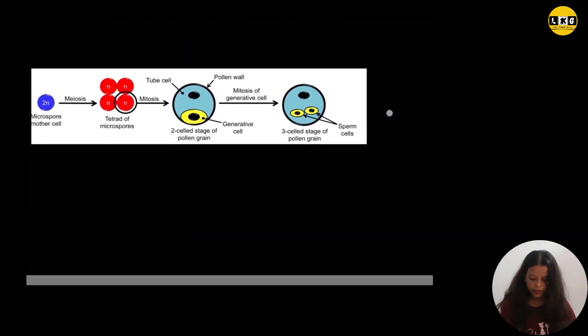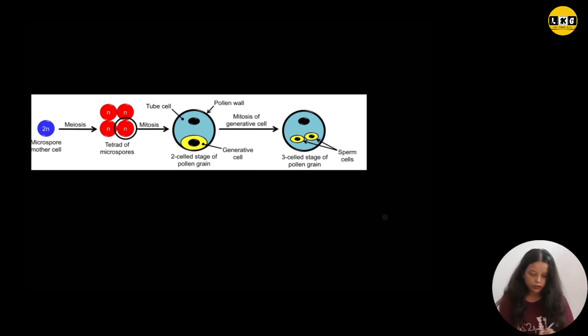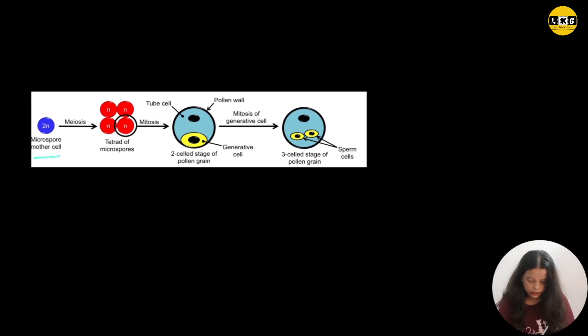So you can see in the diagram. Here, microspore mother cell might undergo meiosis in order to form microspore tetrad and this process is known as microsporogenesis. Later, each microspore will undergo mitosis and forms two cells: one vegetative cell and one generative cell. And this is known as two-celled stage of the pollen.